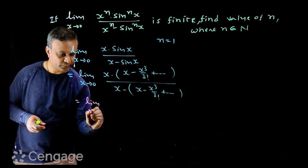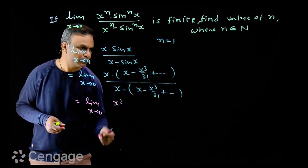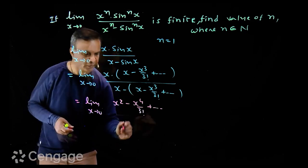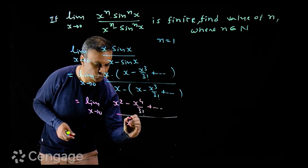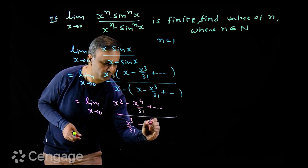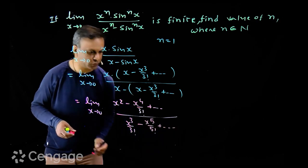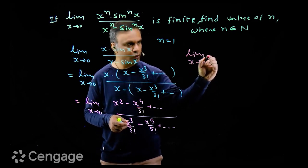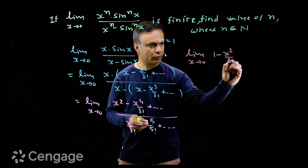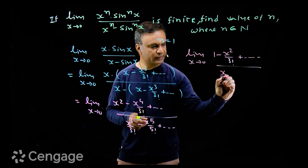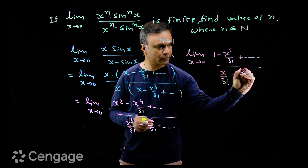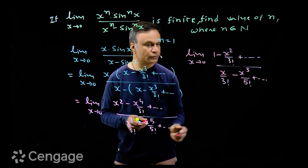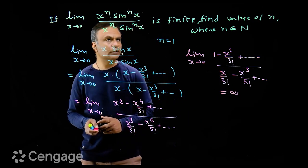In the denominator, x gets cancelled out. Multiplying x inside the bracket in the numerator gives x² minus x⁴/3! and so on. The denominator becomes x³/3! minus x⁵/5! and so on. We can cancel out x² from numerator and denominator, leaving: limit as x tends to zero of (1 minus x²/3! and so on) over (x/3! minus x³/5! and so on).